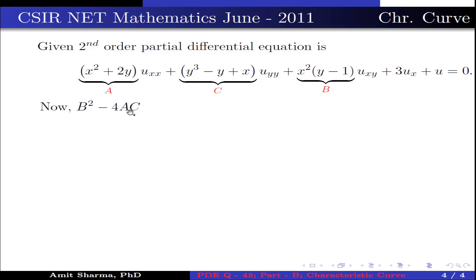Now, B² - 4AC = [x²(y - 1)]² - 4(y³ - y + x)(x² + 2y). Now calculate B² - 4AC at x = 1 and y = 1. We get -12, which is less than 0.